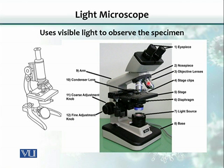This part is the objective lens. There are three or four different lenses with different powers of magnification. This part is called the eyepiece, and here is a knob for focusing the image.